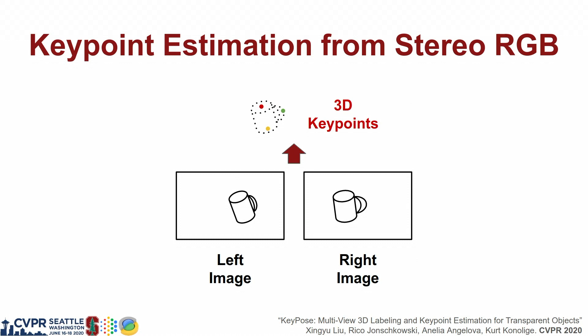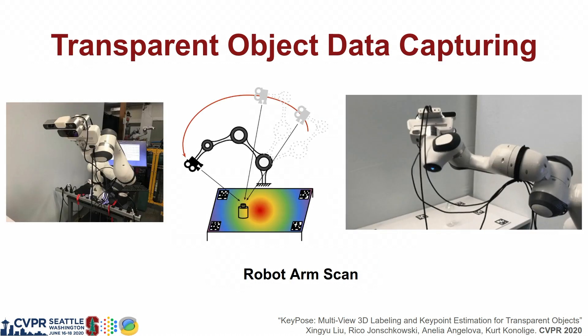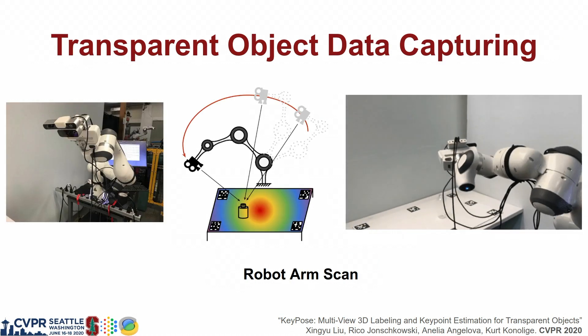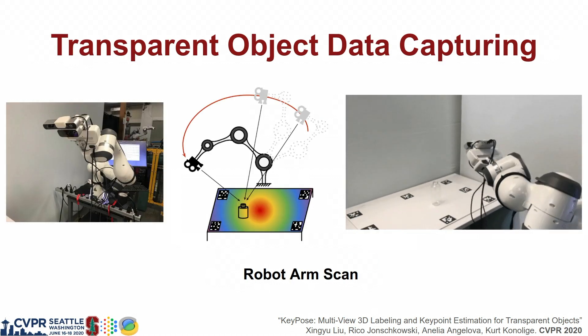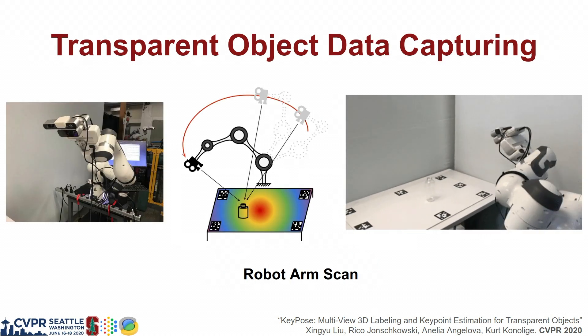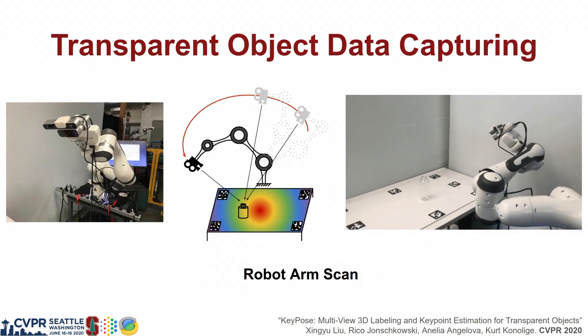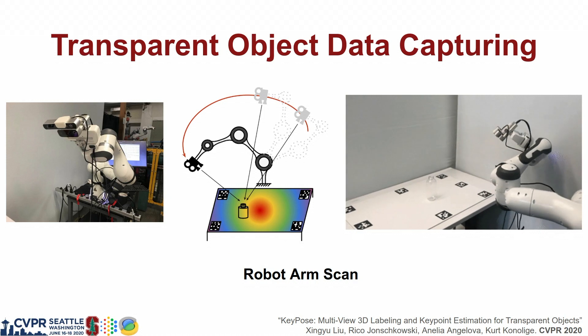Here is our solution. We use 3D keypoint locations to represent the pose and predict it from stereo images. We use a robot arm to efficiently capture and label data by scanning the objects from different views.